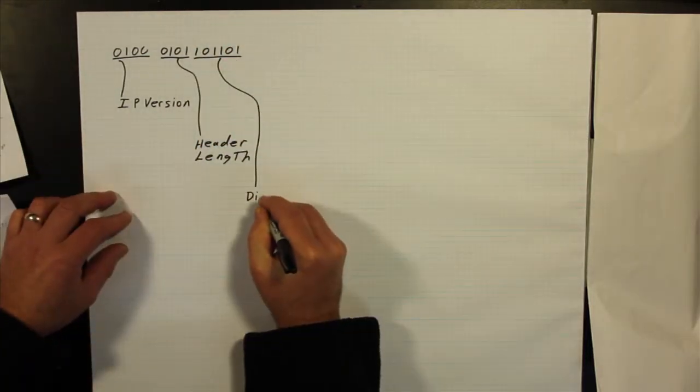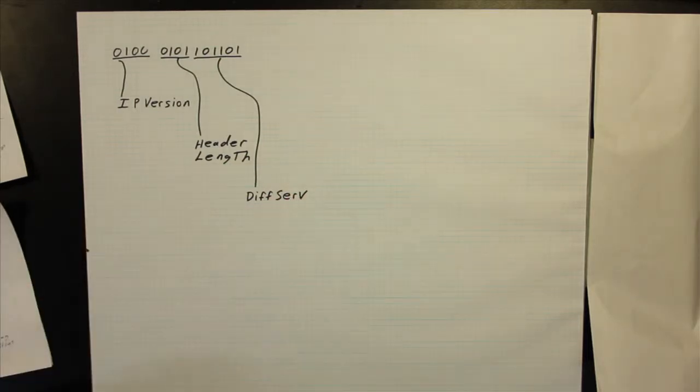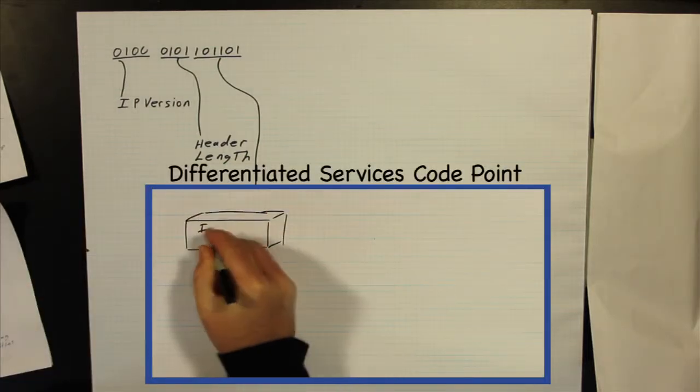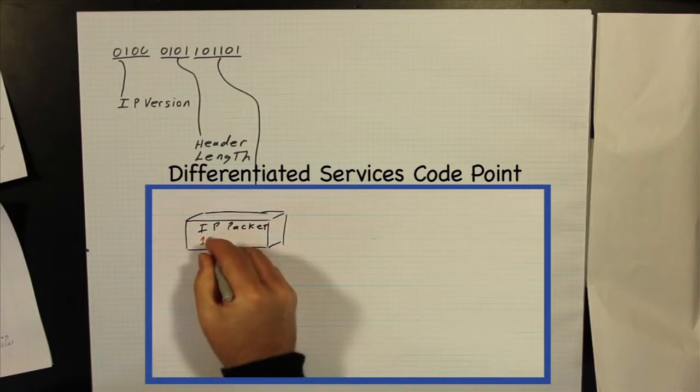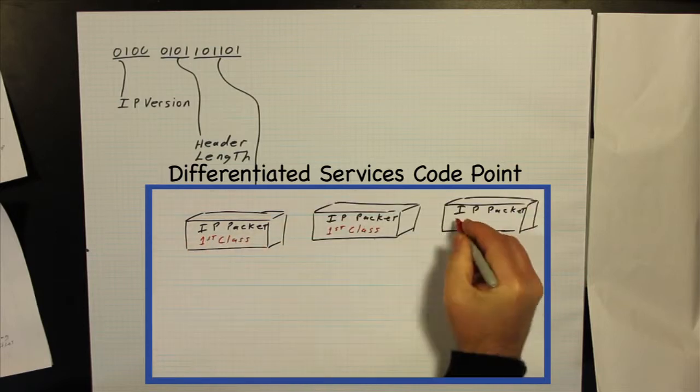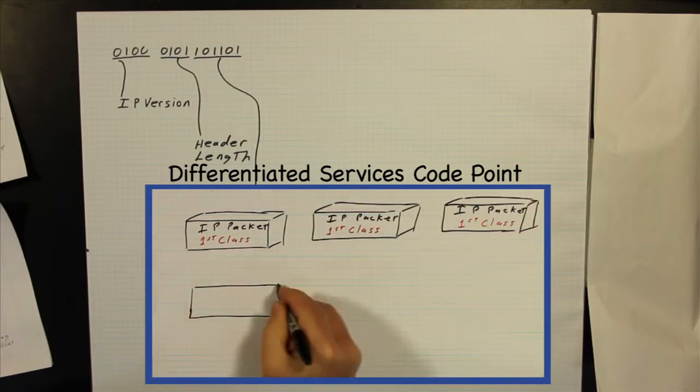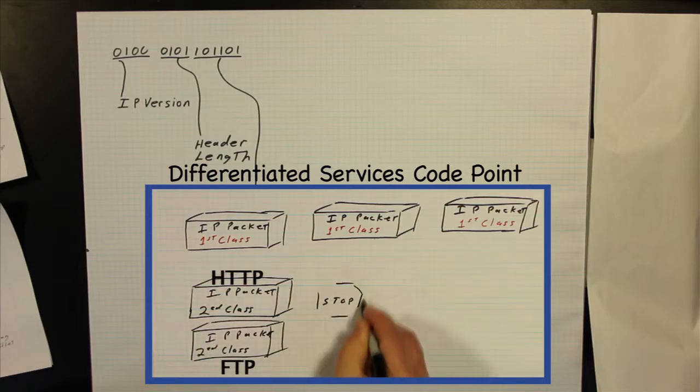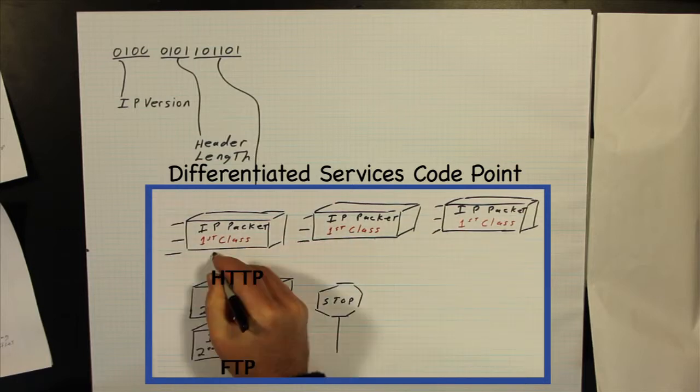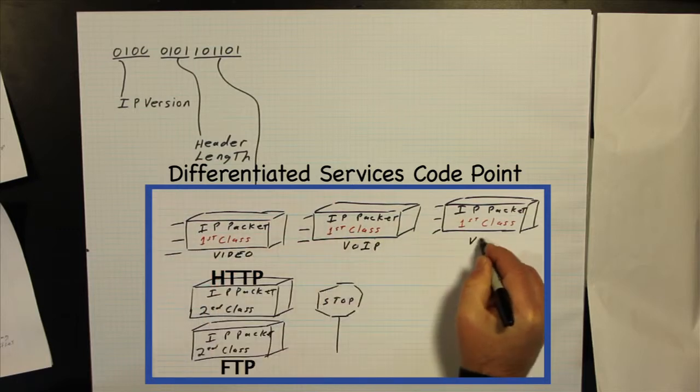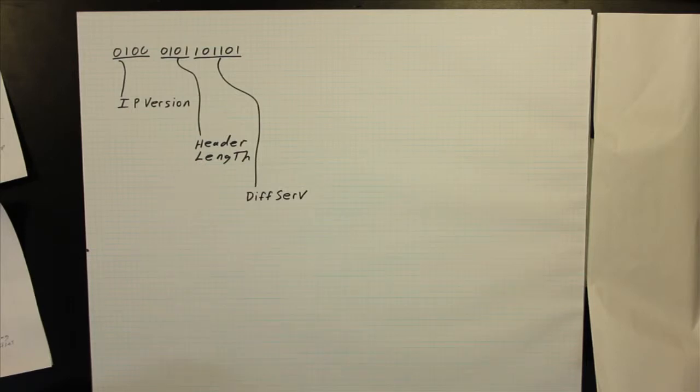DIFFSERV or Differentiated Services Code Point is how IP packets are differentiated into classes, and this governs how the network handles them. Using classes, networks speed up traffic, allowing time-sensitive packets to arrive on time and delaying other non-time-sensitive packets.